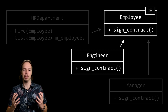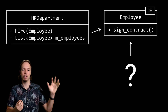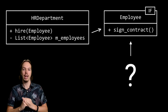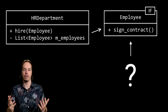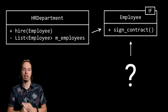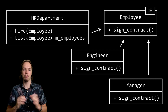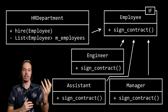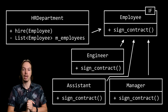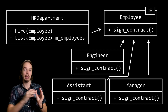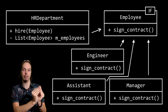If a class like the engineer or manager class wants to implement an interface, then it should provide all the functionality described in the interface — the concrete implementation for the sign contract function. Since every implementation of an interface is guaranteed to provide that function, we can now write the hire function in terms of that interface without caring whether it's implemented by a manager, engineer, or assistant. As a result, the HR department class no longer depends on specific roles. If we want to extend it, we simply add a new role, make sure it implements the employee interface, and we don't have to touch the HR department class anymore.